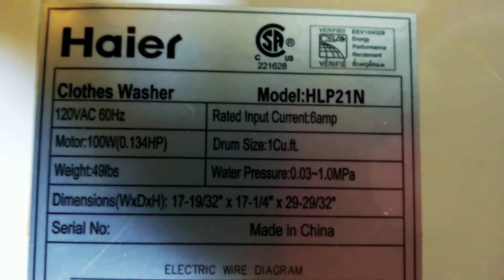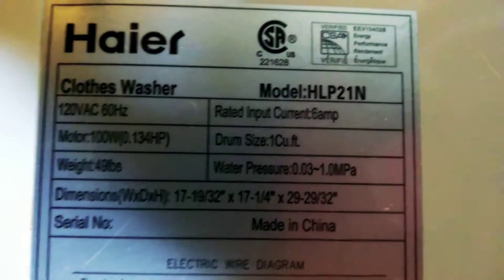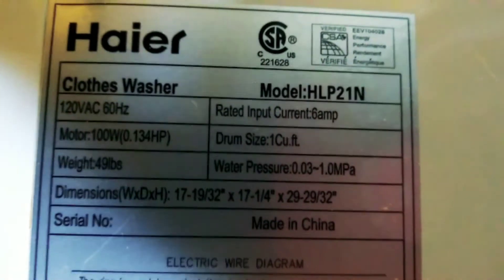This is a Haier model HLP 21N clothes washing machine and we'll be doing a belt replacement because the inner drum where you put your clothes was not spinning.